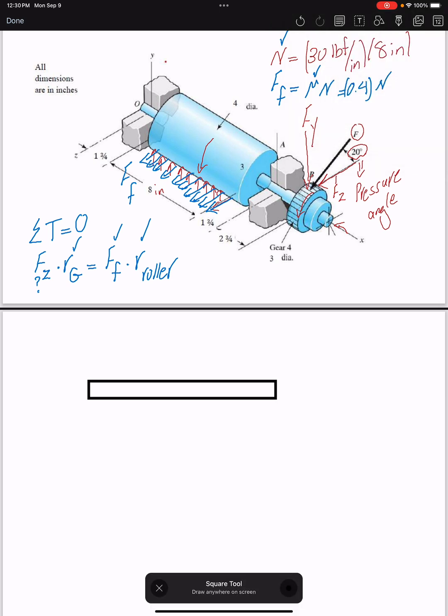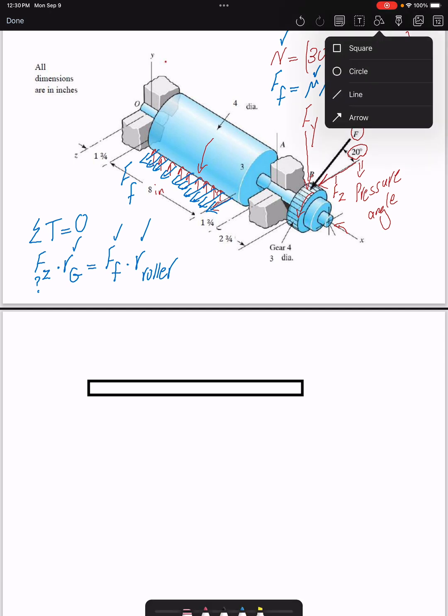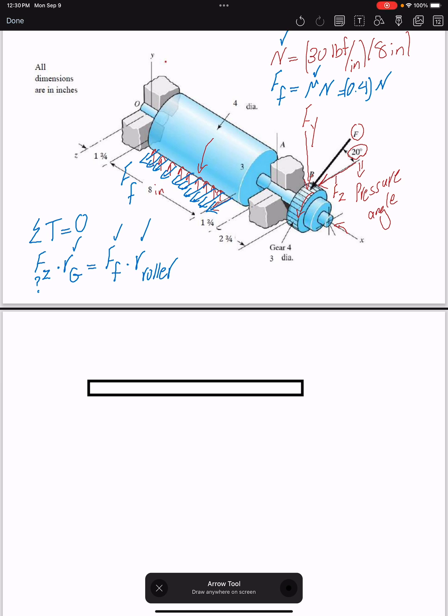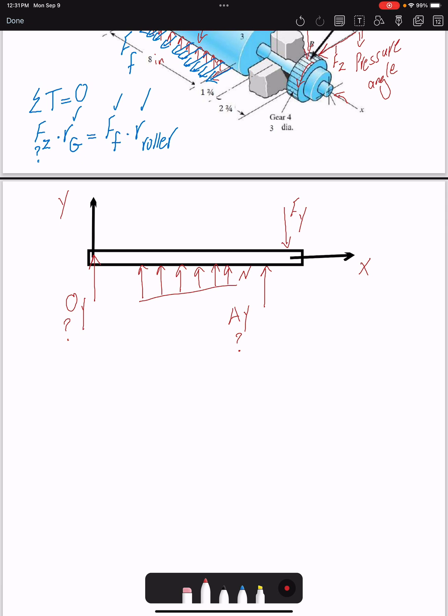So the torque that is caused by force FZ times the radius of the gear would be the same as the resisting torque created by friction, so the friction times the radius of the roller. I have the friction force and dimensions, so I can find FZ and then FY. Using static equilibrium I can find the reaction forces. If I draw the free body diagram, I can break it into two 2D planes. I will have one plane in X and Y.